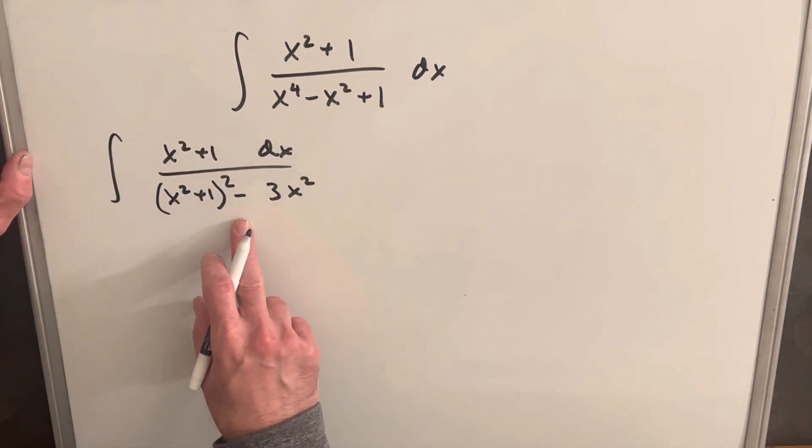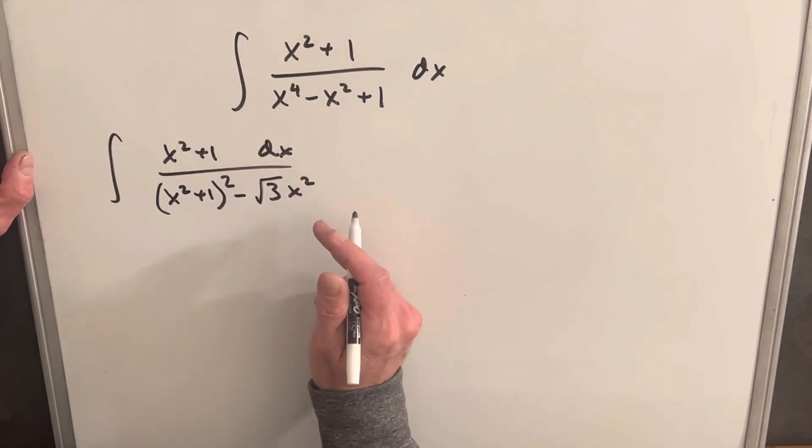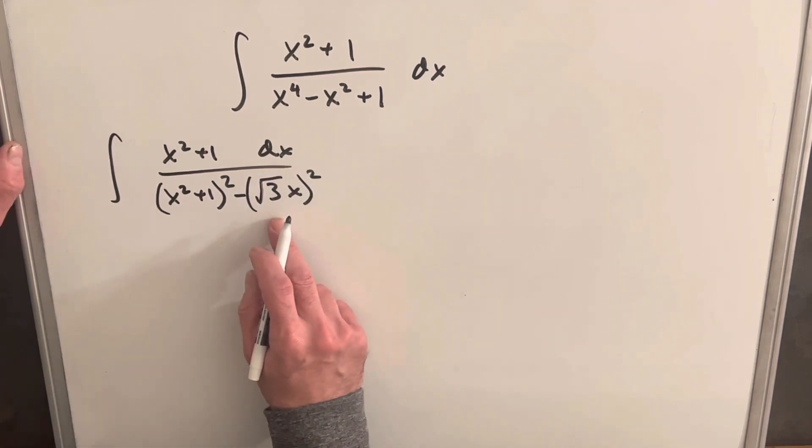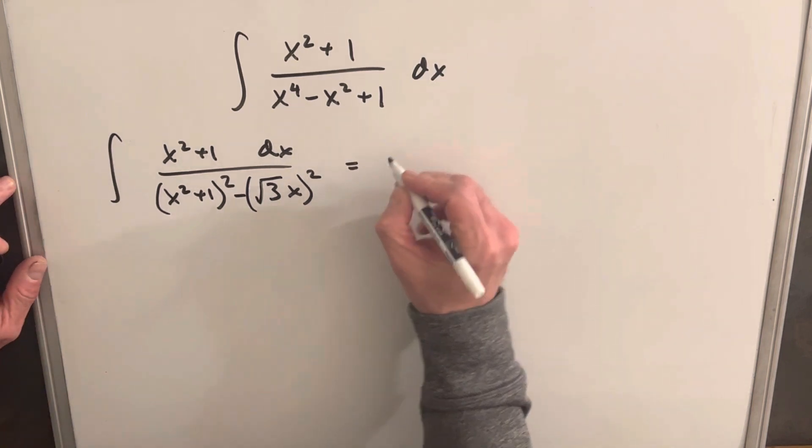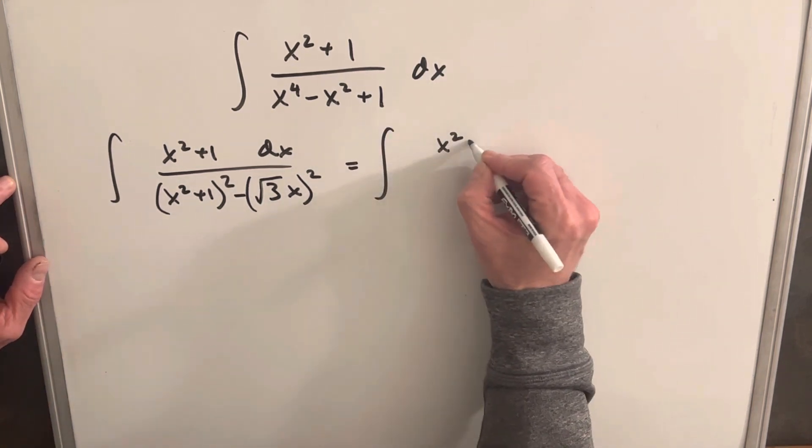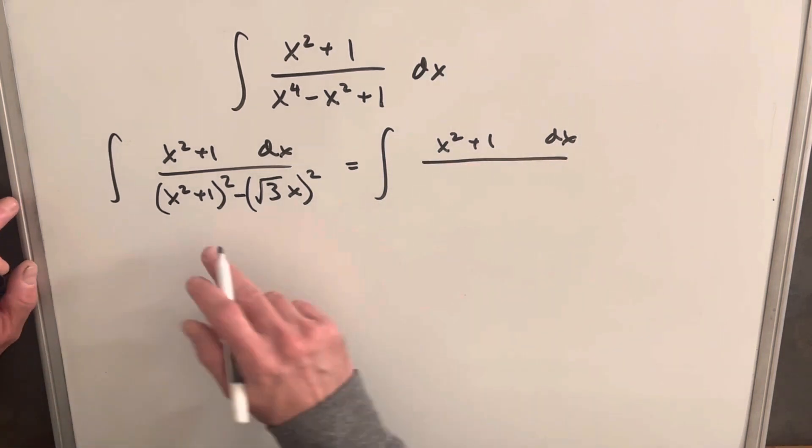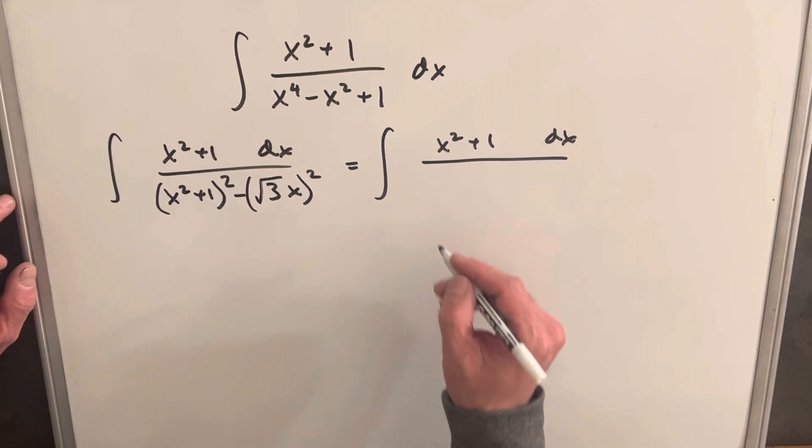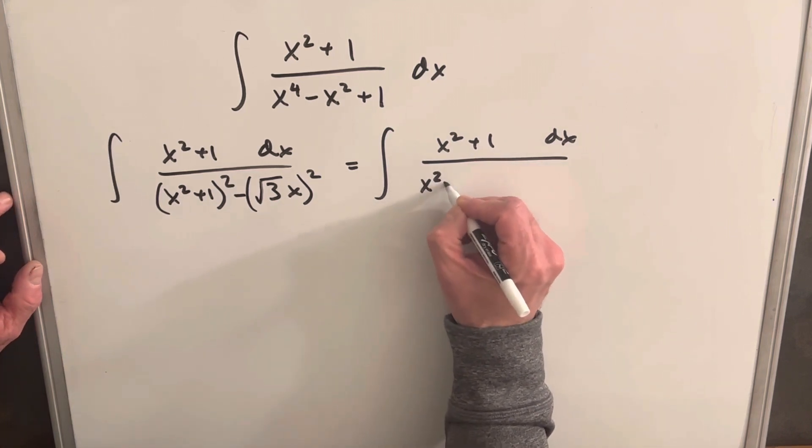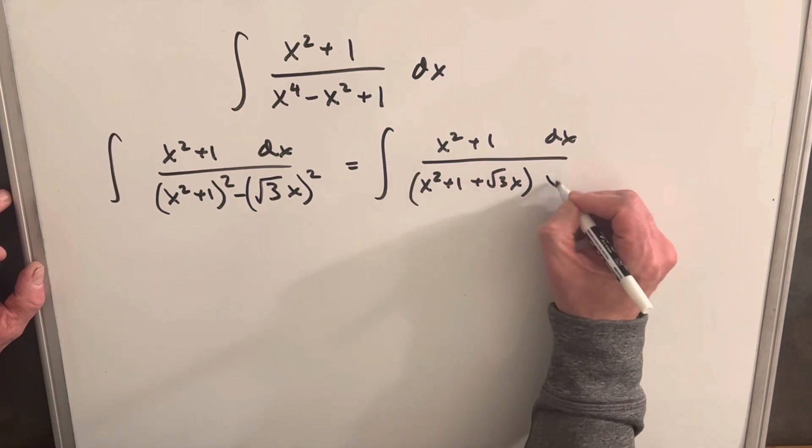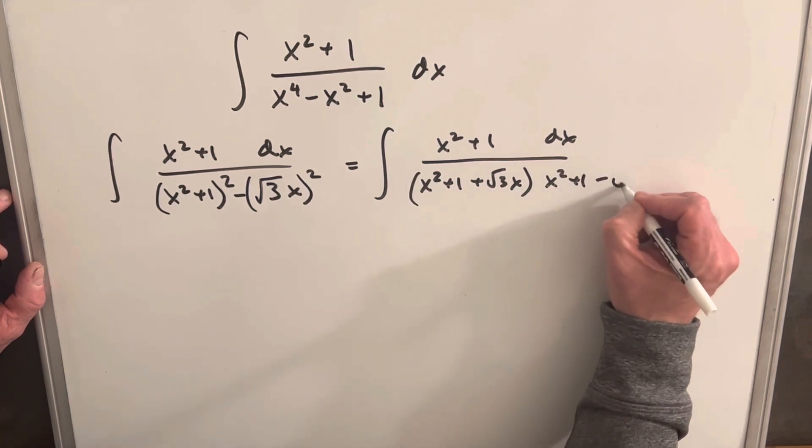So next what I want to do is create the denominator to be difference of two squares. So we'll put a square root on our 3. Remove this and square it. And then notice that that is the same thing as 3x squared. And then what that's going to allow us to do is when we rewrite this integral, we can use our difference of two squares. When we have a squared minus b squared, we can write it as a plus b times a minus b. So in this case, it's going to be x squared plus 1 plus square root of 3x times x squared plus 1 minus square root of 3x.